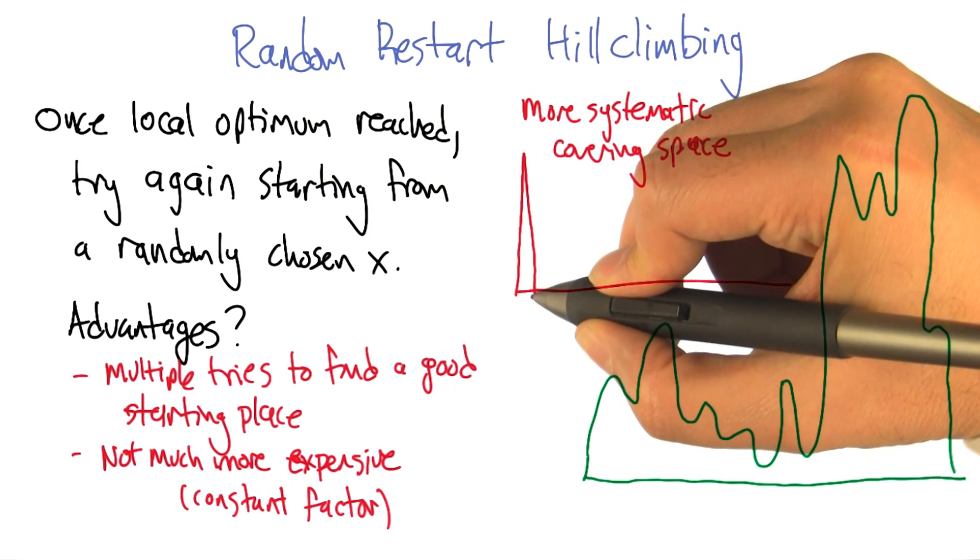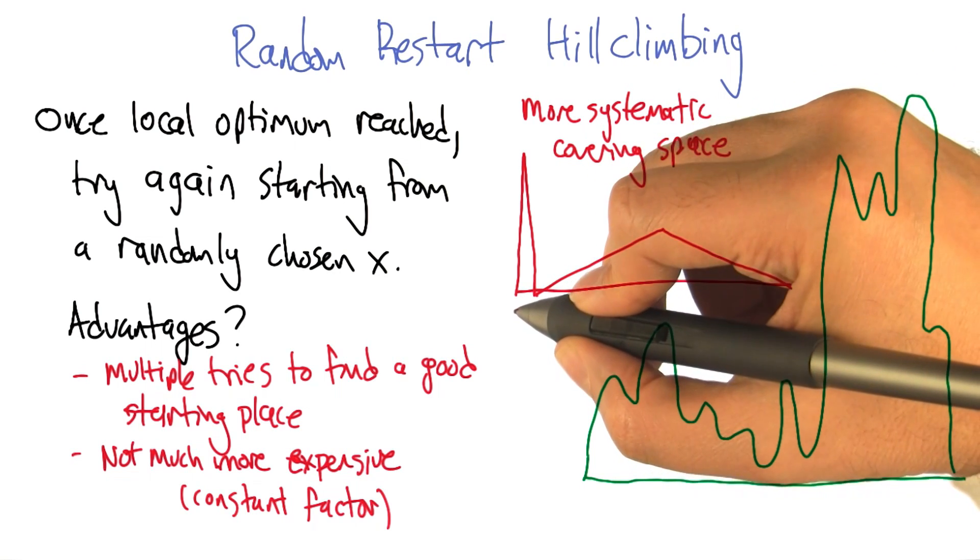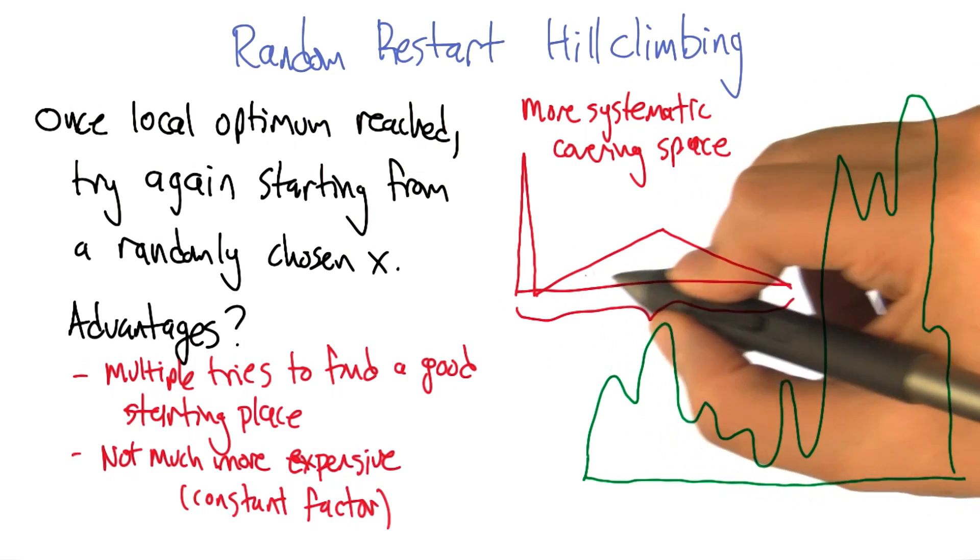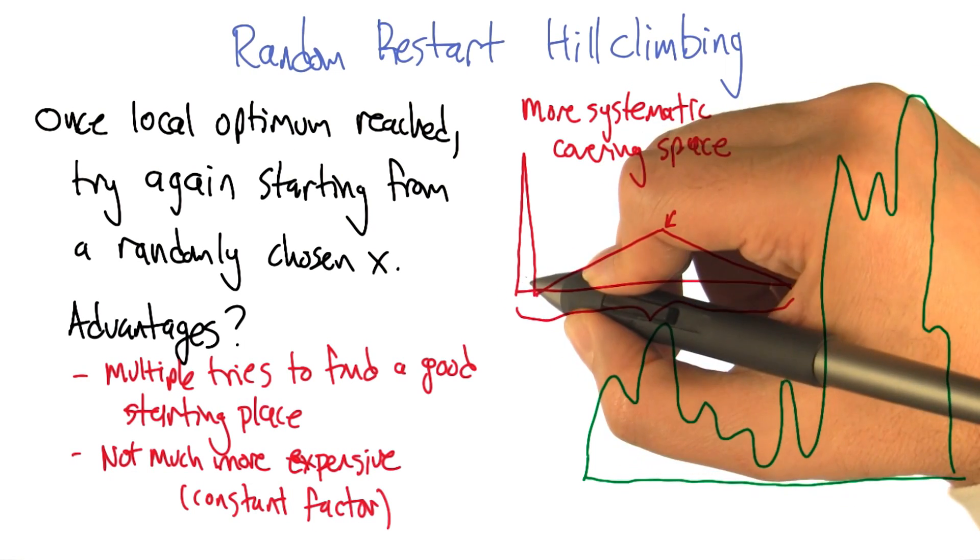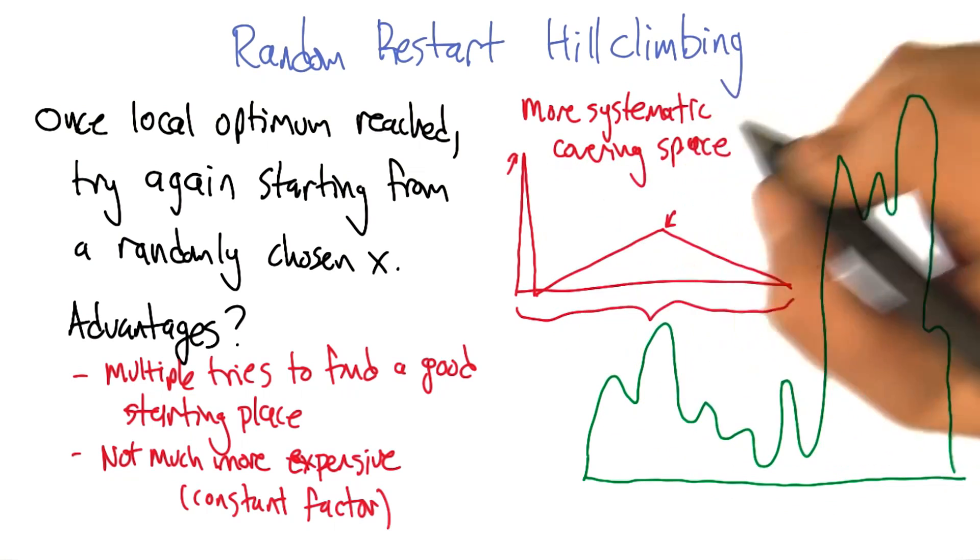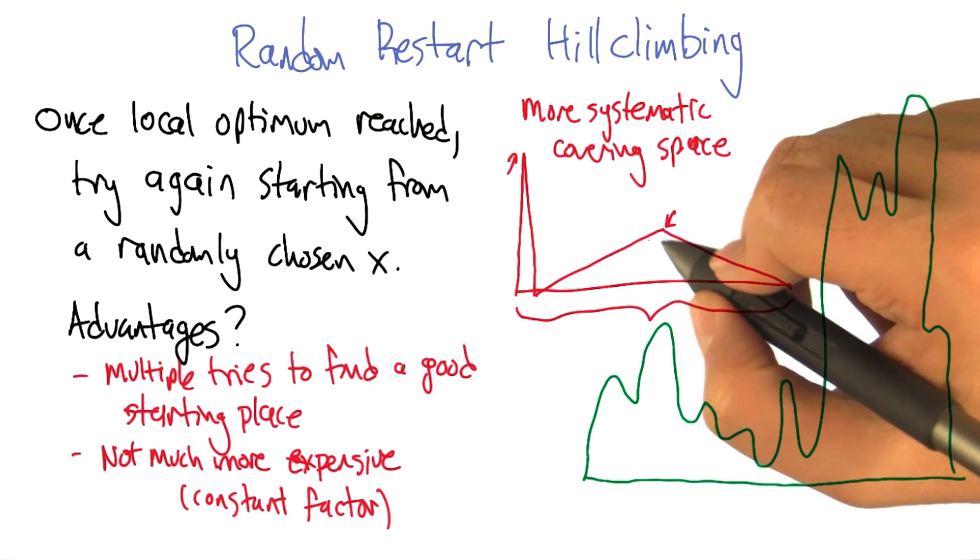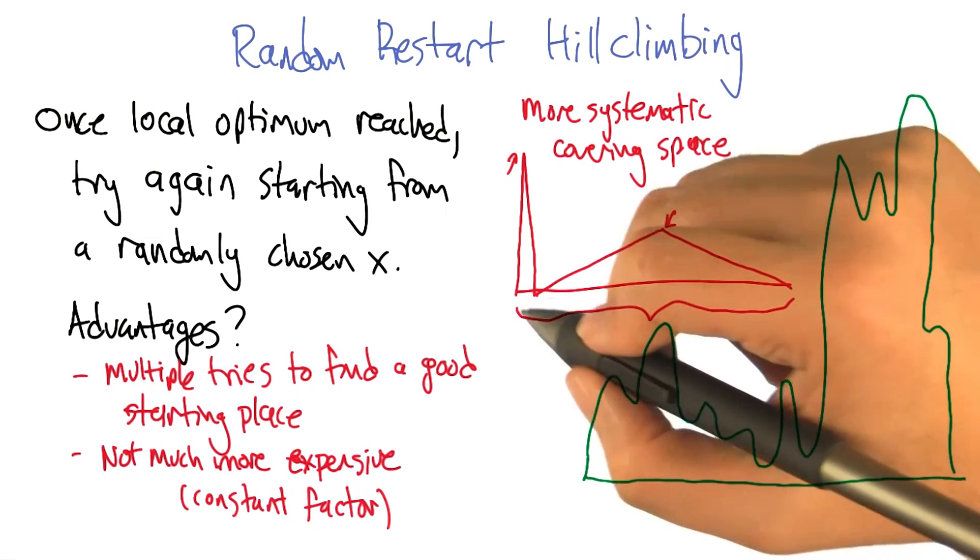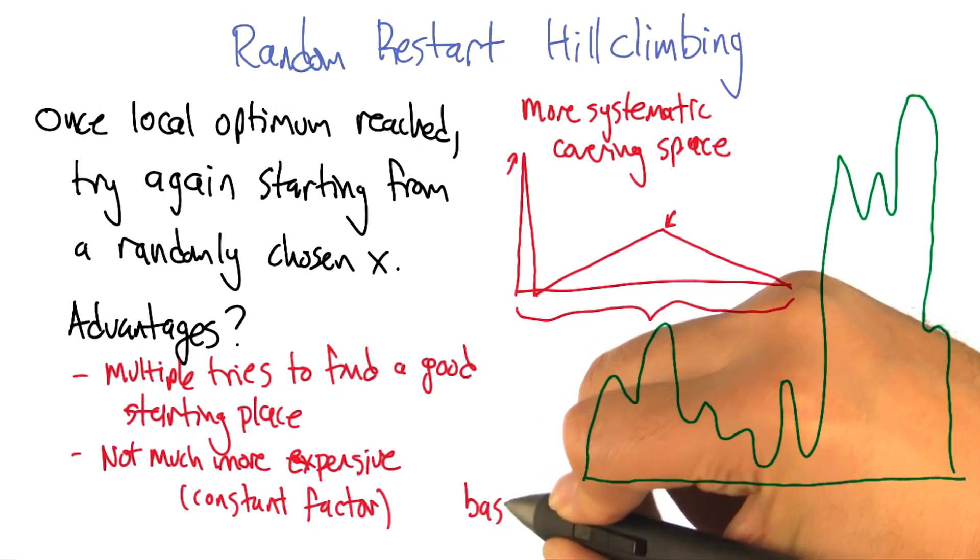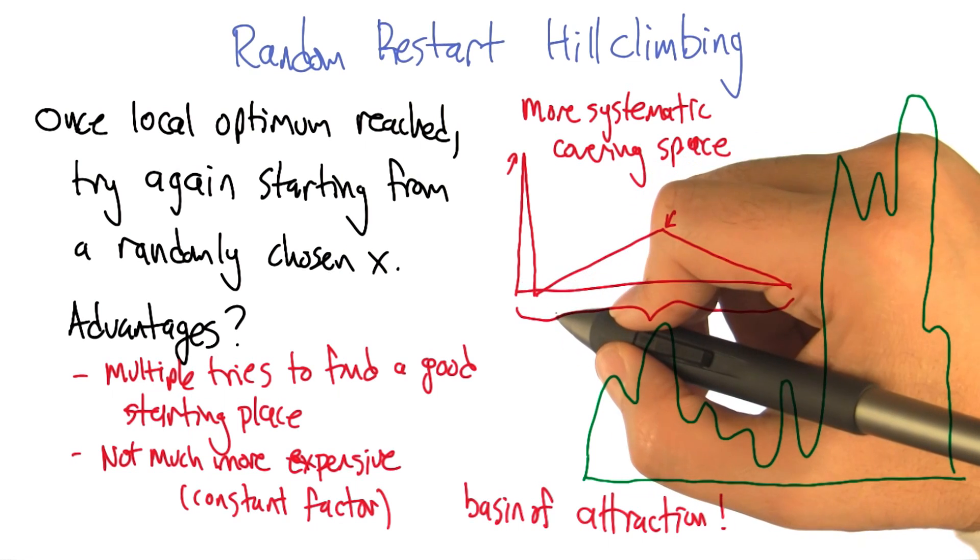Here might be an example of a kind of function where that would be really relevant. Imagine we've got, here's our input space. Most of the random points that we choose are all going to lead us to the top of this hill. But a very small percentage are actually going to lead us to the top of the real hill, the top that we really want, the optimum. We might not want to give up after a relatively small number of tries because it could be that there's just this tiny little basin of attraction. And if it's small enough, it might take lots of tries to hit it.